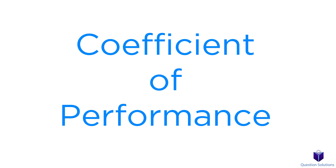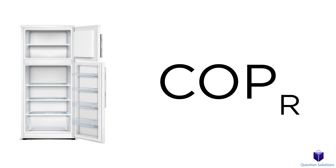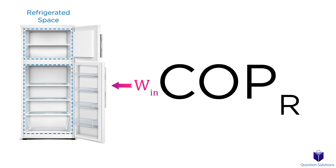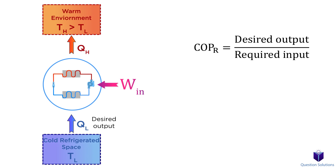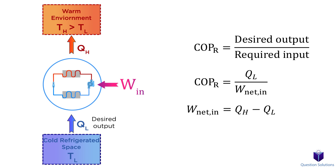The effectiveness of a refrigerator is expressed by something called the coefficient of performance, or COP with a subscript r to represent a refrigerator. Keep in mind that the function of a refrigerator is to remove heat from a refrigerated space. To do this, it needs work input. So if we wanted to figure out the COP, we need to divide the desired output by the required input. In this case, the desired output is QL and the required input is the work input. QL is the magnitude of heat removed from the refrigerated space. Remember that for any cyclic device, we can find the work input by subtracting QL from QH. If we plug this into our COP equation, we can write it like this.